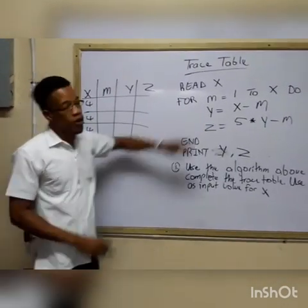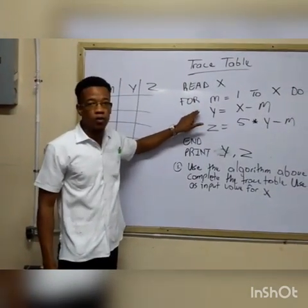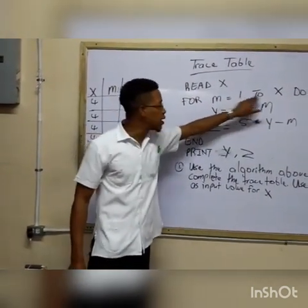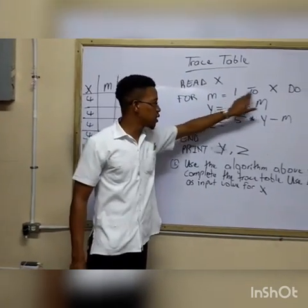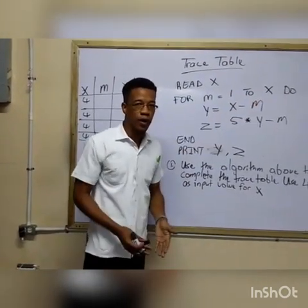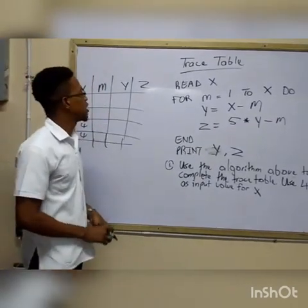That's because we are using a for loop for this question. A for loop has a start value and an end value. Start value and end value. So 1, 2, 3, 4.